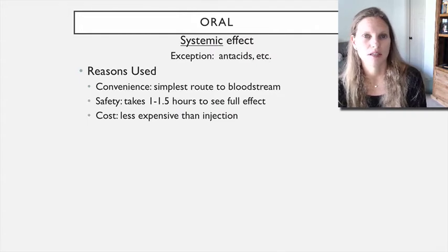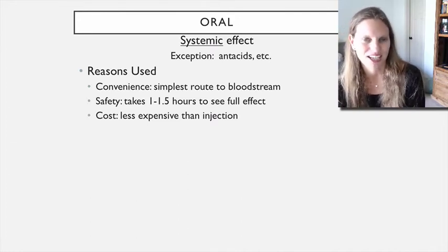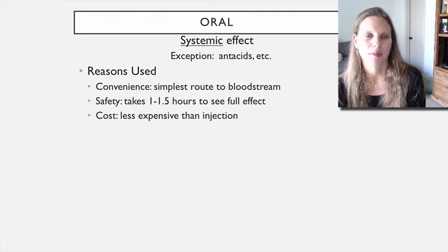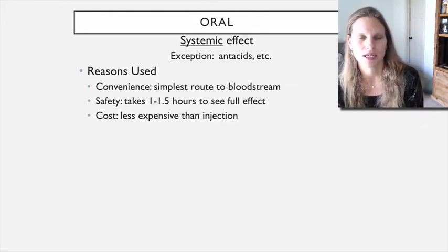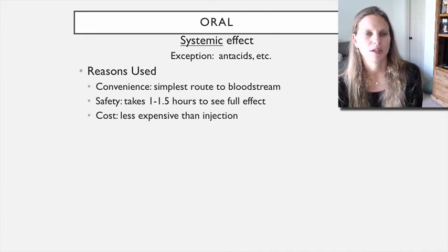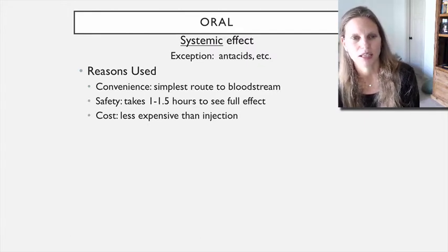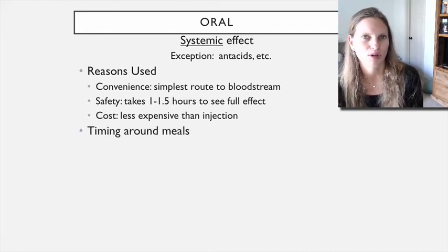Generally, with the exception of maybe an antacid, we're thinking of a systemic effect when giving oral medications. We swallow the pill, it gets absorbed across the wall of the small intestine, moves into the blood supply, goes into general circulation, and hopefully finds the target while the drug concentration is still high enough to be effective. This route is easy, safe, slower to take effect—which is helpful if you make an error—and is less expensive, doesn't require injection, and can be done at home.